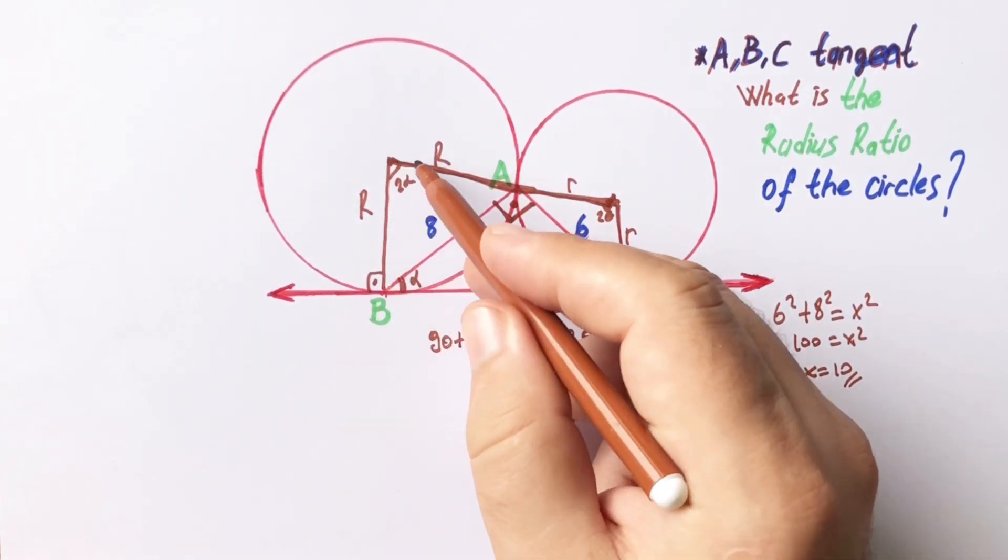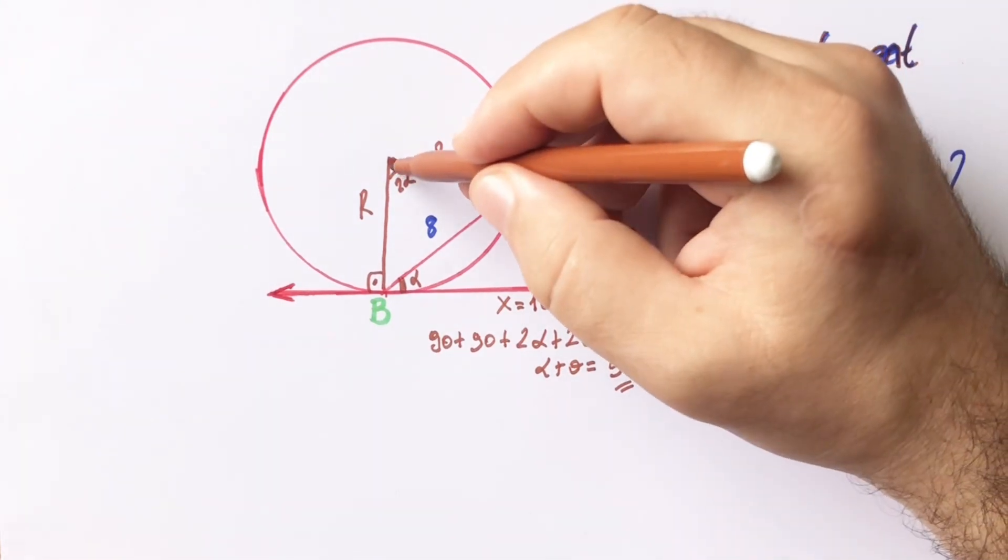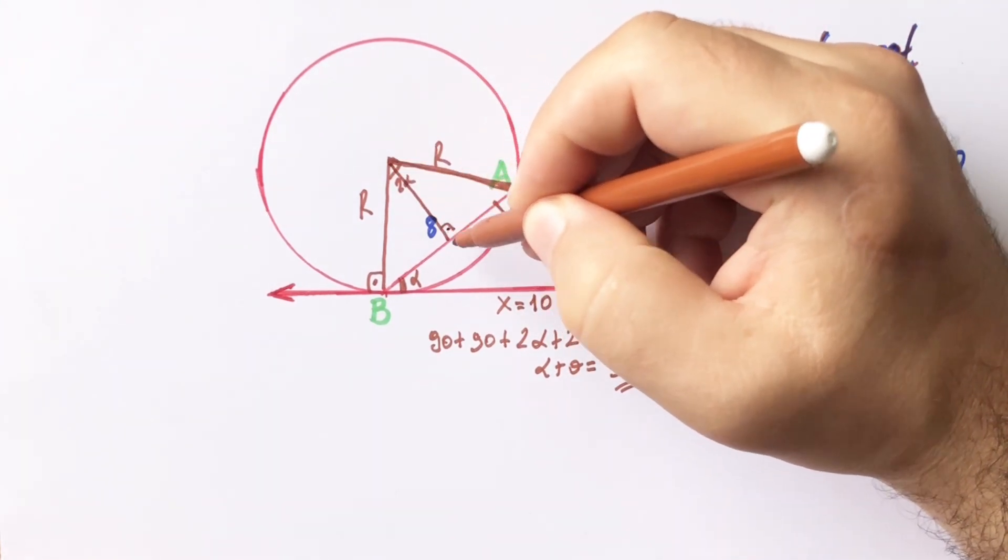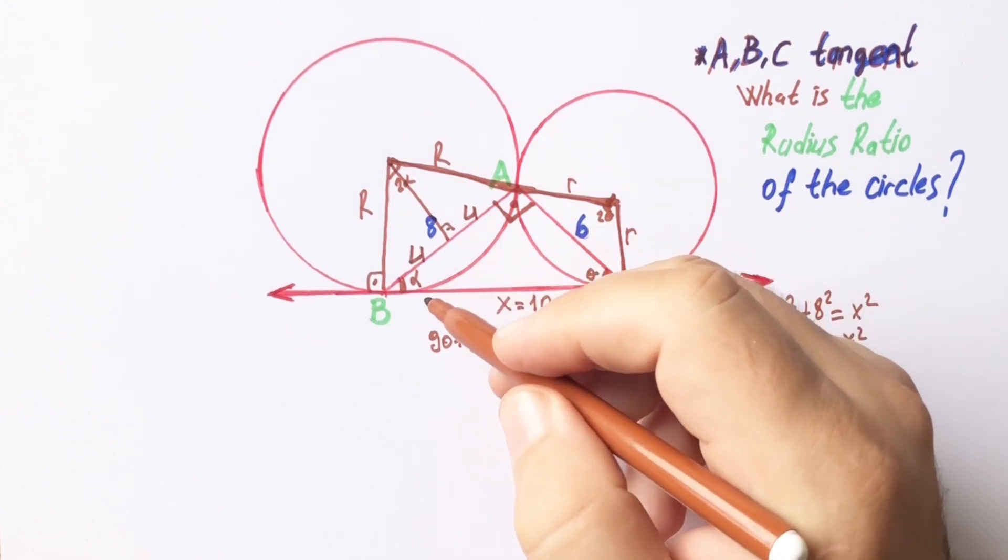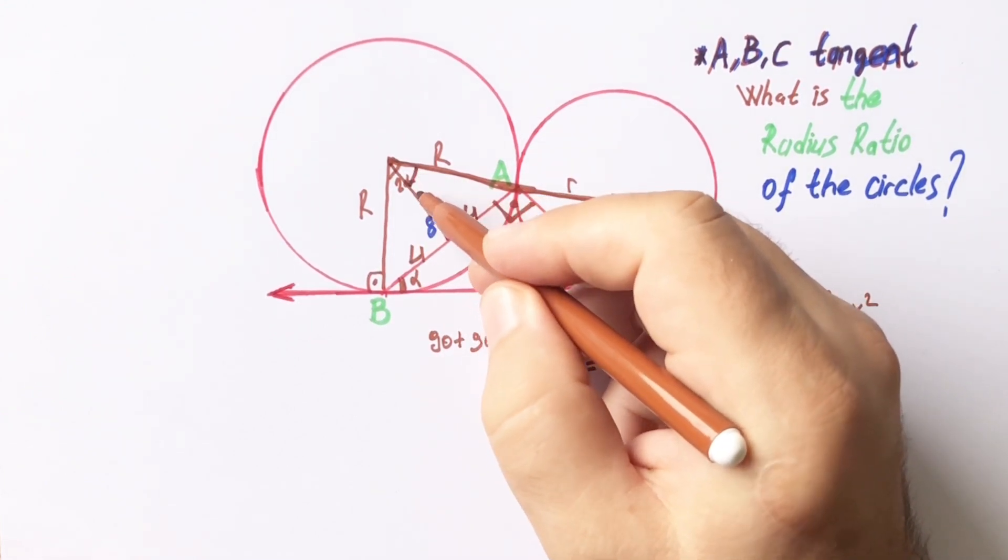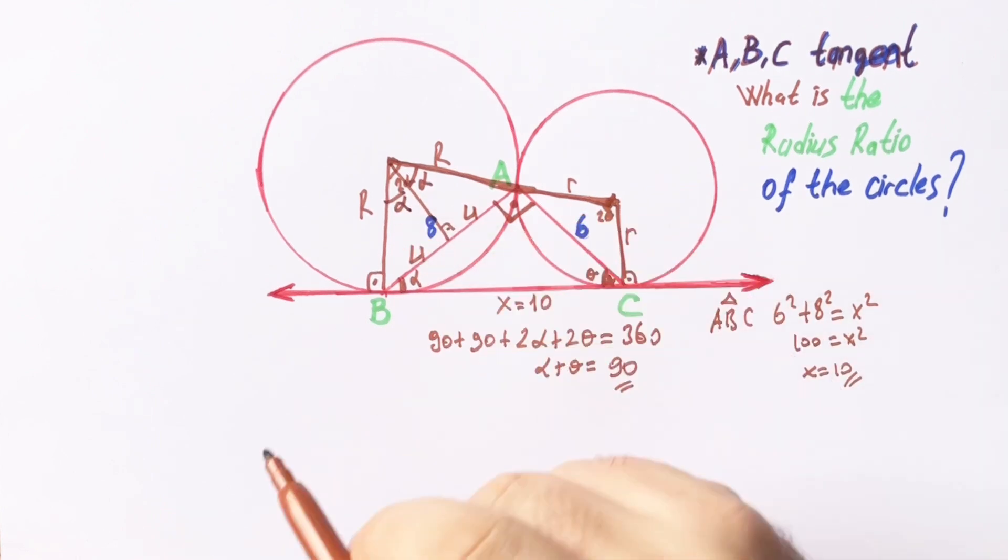This triangle is an isosceles triangle. So if we draw a perpendicular line, the base will be divided into two equal parts and the apex must be divided into two equal angles.